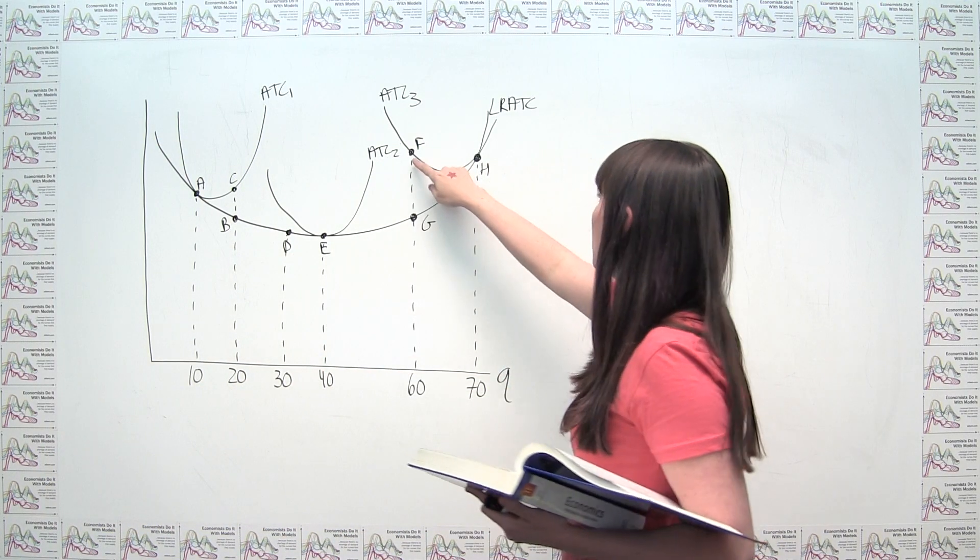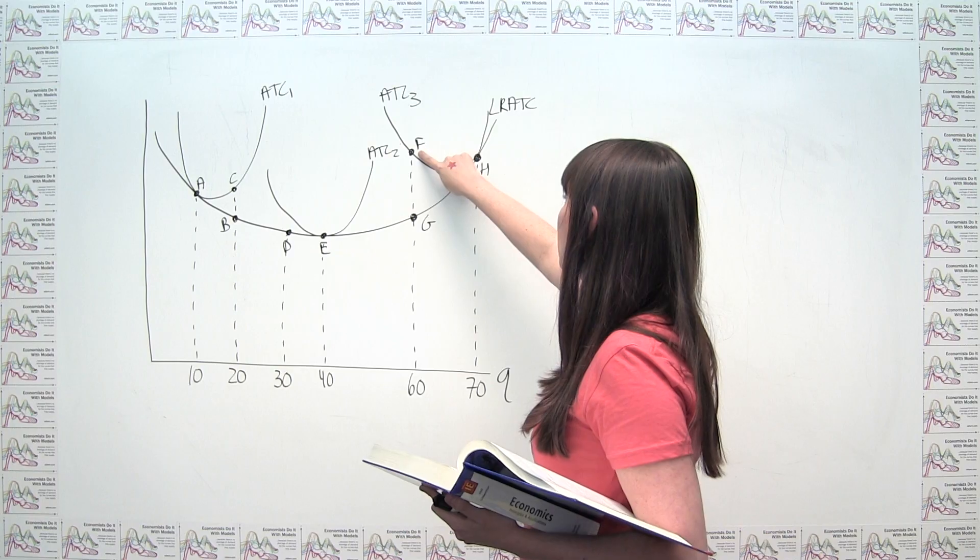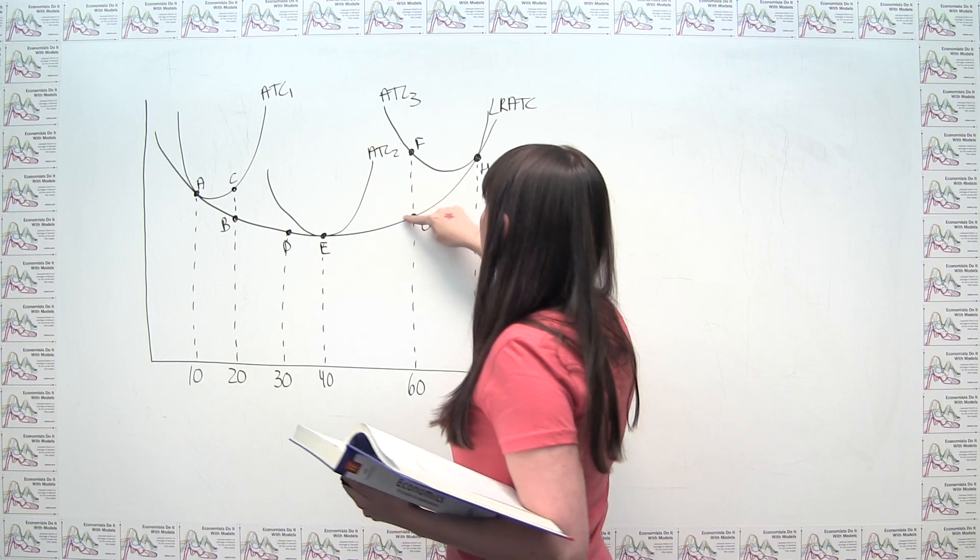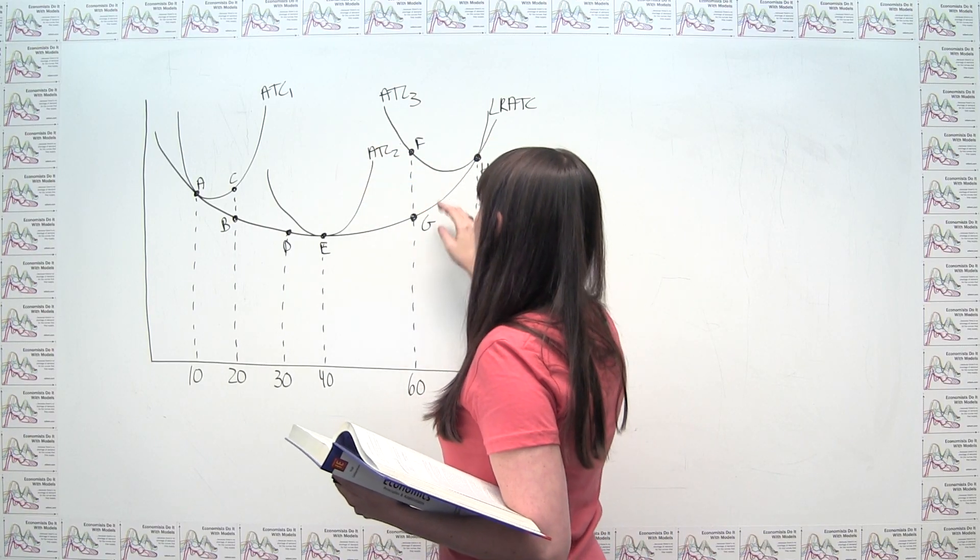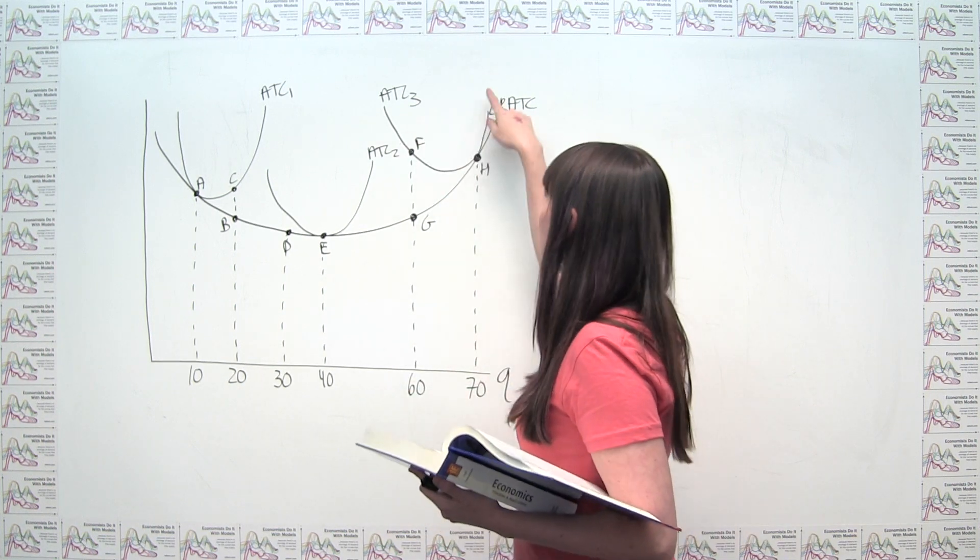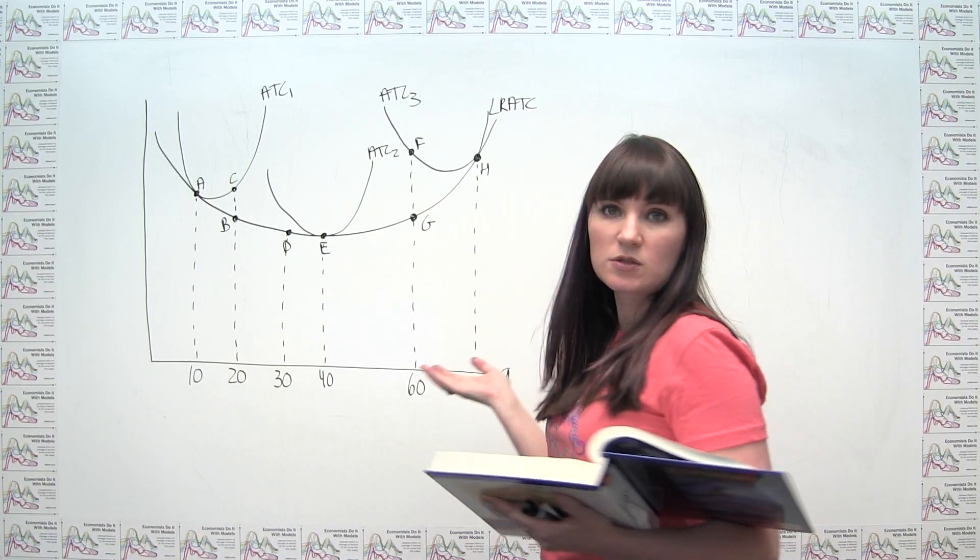Conversely, we can see that this point F is not going to be on our long run average total cost. And what that means is that there must be some other factory size that can actually produce 60 units at lower cost than this factory size here. So if we're good with that, we can actually answer this question pretty easily.